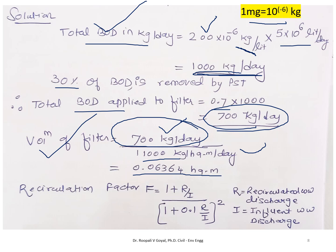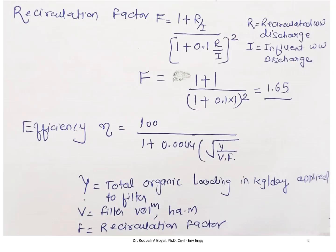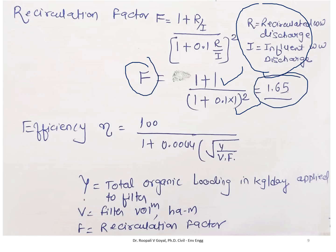Now for recirculation factor F. The formula is F = (1 + R/I) / (1 + 0.1 × R/I)², where R is recirculated flow and I is influent wastewater discharge. R/I is the recirculation ratio = 1. Substituting gives recirculation factor F = 1.65.